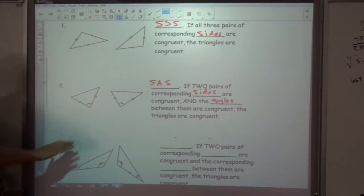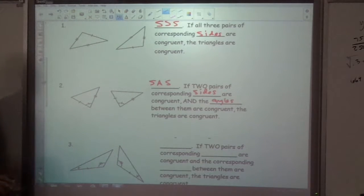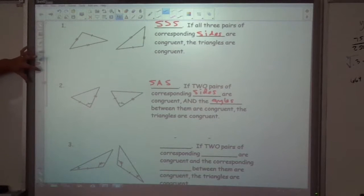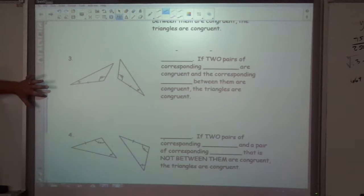That's enough to know that, hey, we will be able to turn this and slide it and it'll map one on top of another. So if we have side, angle, side, that's enough to prove they're congruent.